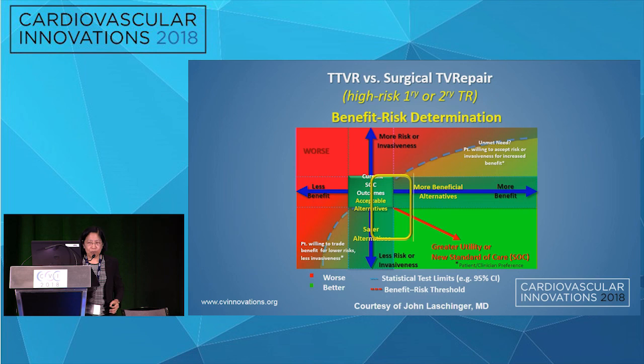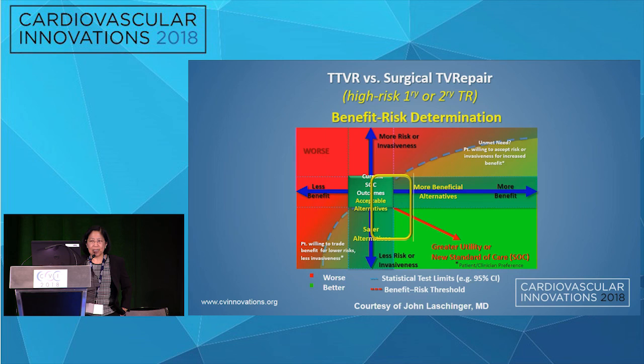The effective regurgitant orifice area might not be as variable as the jet, so using multimodality imaging to confirm the regurgitant orifice area or the anatomic regurgitant orifice area could help. We should see RV remodeling, an increase in forward flow, and improvement in liver function or renal function after successful intervention.